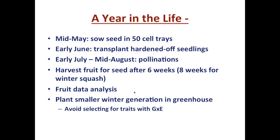Then we have a month or two to get data analysis done before making our selections for the winter greenhouse generation. We try to stage it so the winter generation is smaller, since many of these are large plants that need to be trellised in the greenhouse. We also set up the greenhouse population to avoid selecting for a trait with a lot of genotype-by-environment interaction, since we don't want to inadvertently select for adaptation to the greenhouse if we're looking for a field-grown plant.